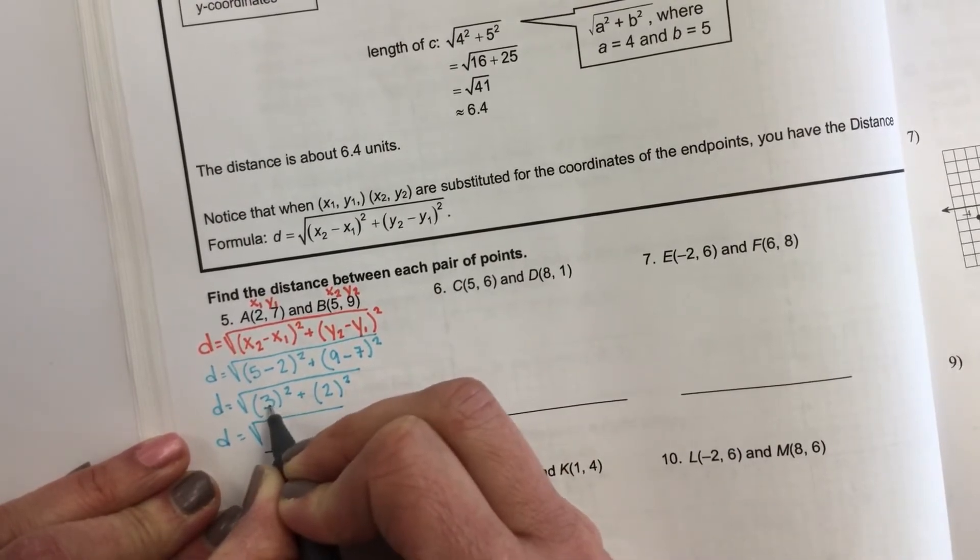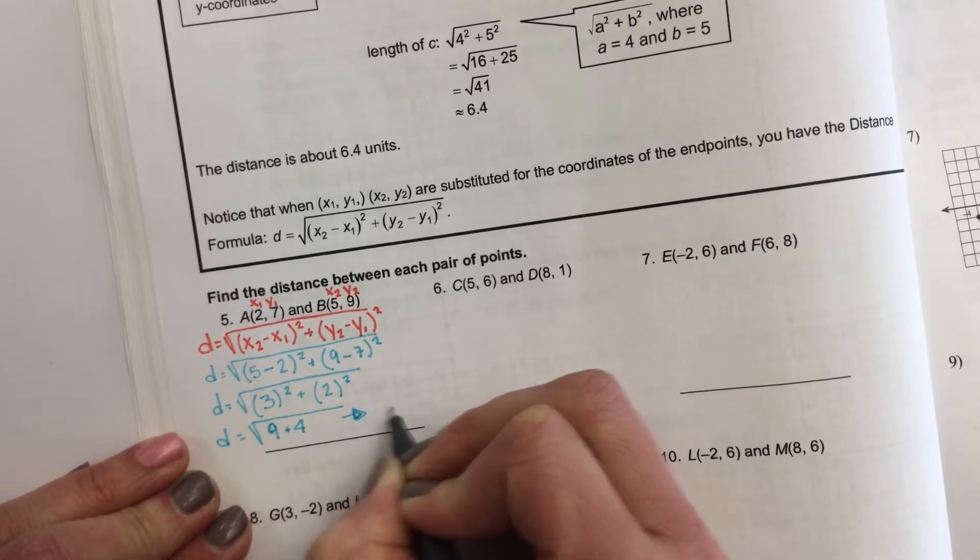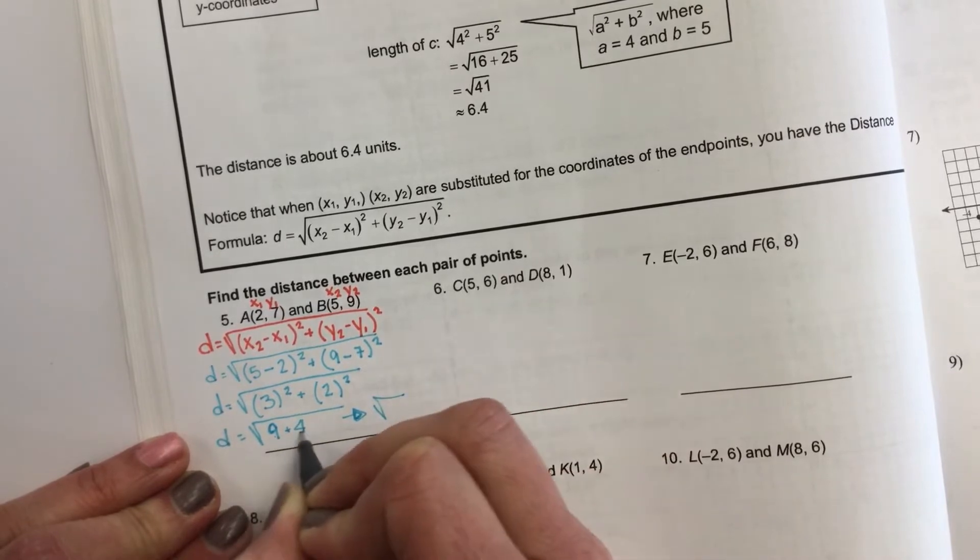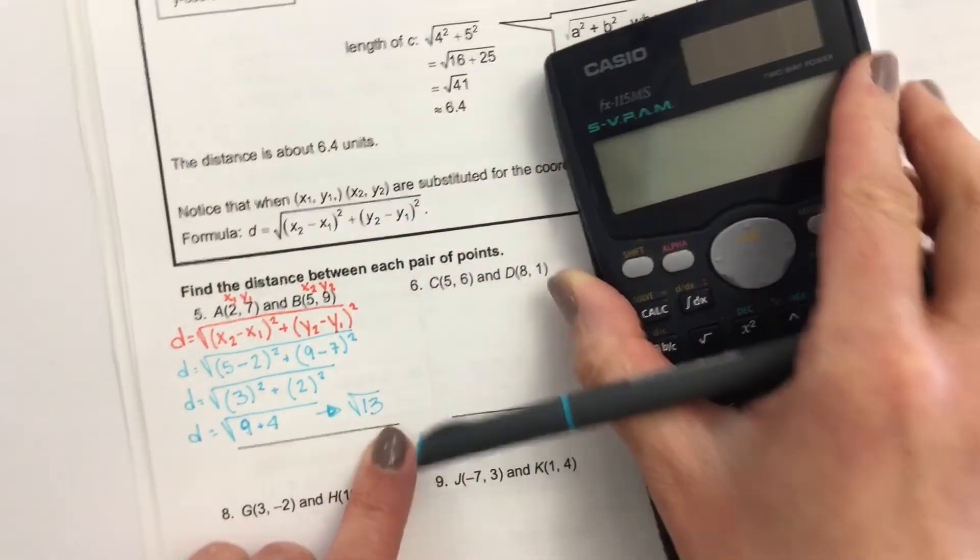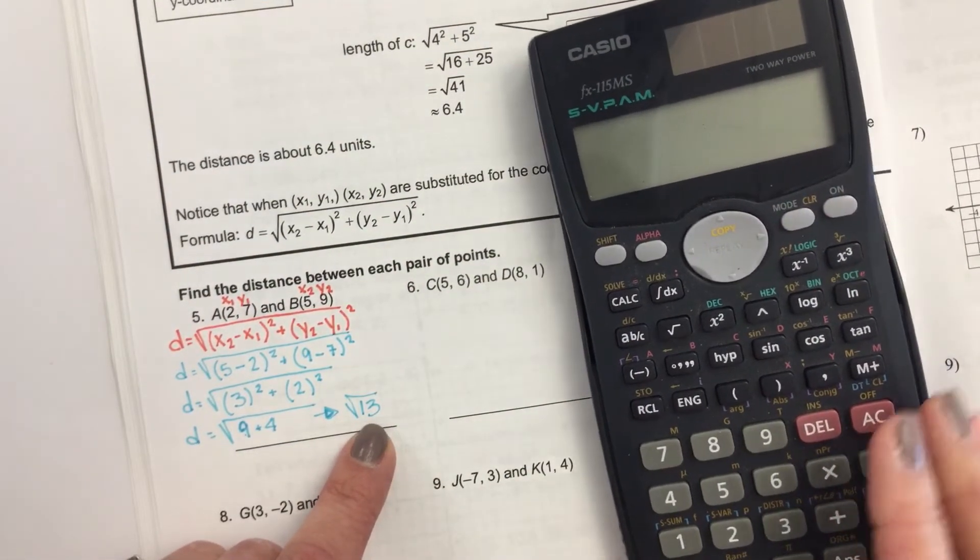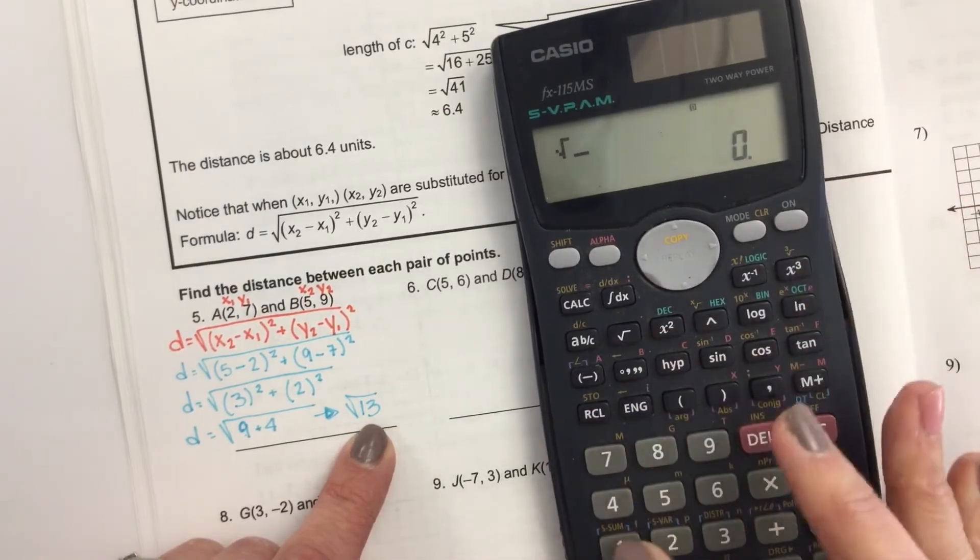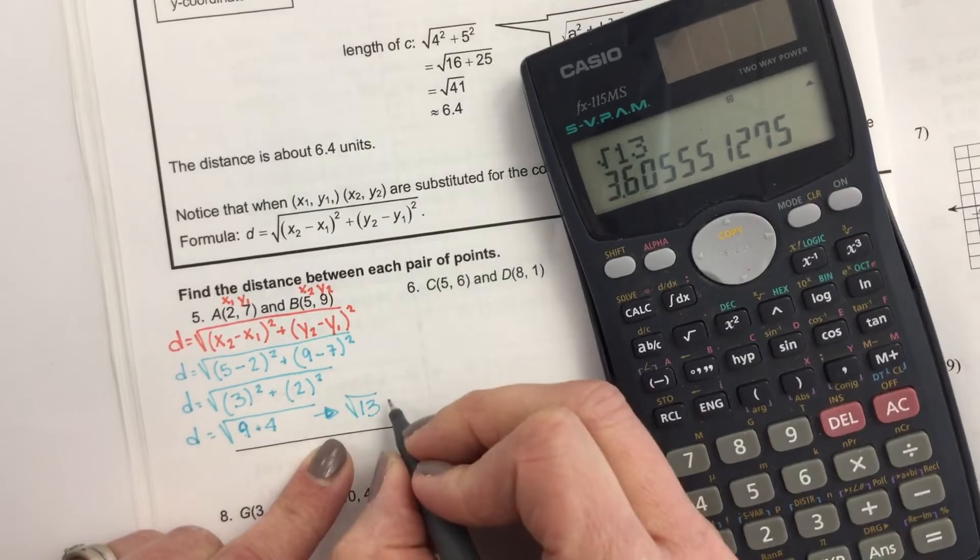So 3 squared is 9. 2 squared is 4. So this is going to be the square root. 9 plus 4 is 13. So sometimes they will want the actual, or sometimes they'll just want the radical. So we're going to get the actual. So I'm going to square root 13, and I get 3.6.